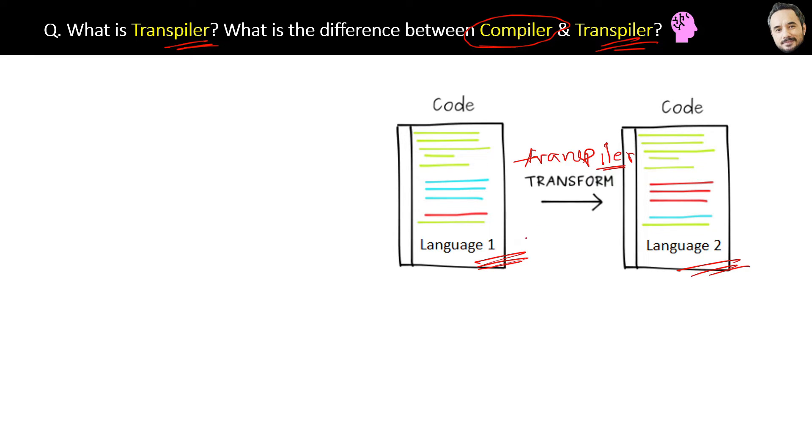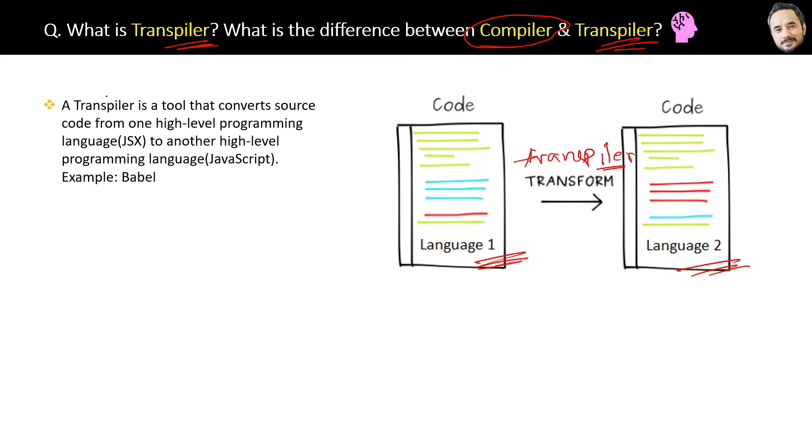For example, Babel is a transpiler to convert JSX to JavaScript. The definition of a transpiler is: a tool that converts source code from one high-level language like JSX to another high-level programming language like JavaScript. Example: Babel.